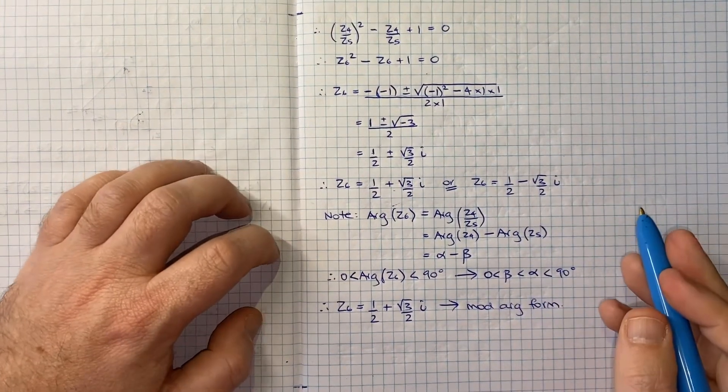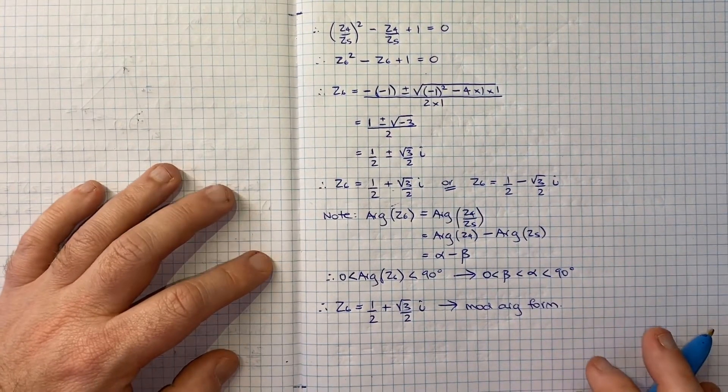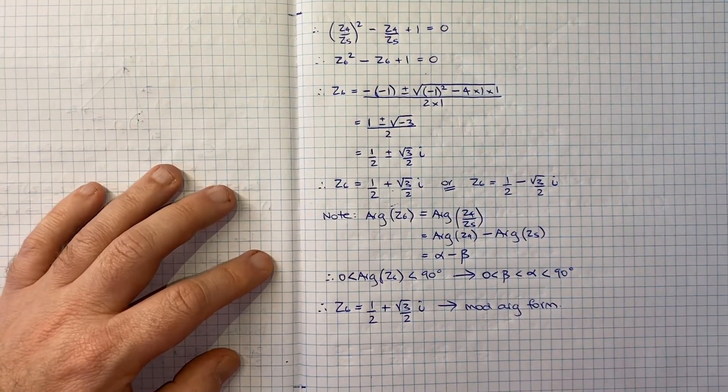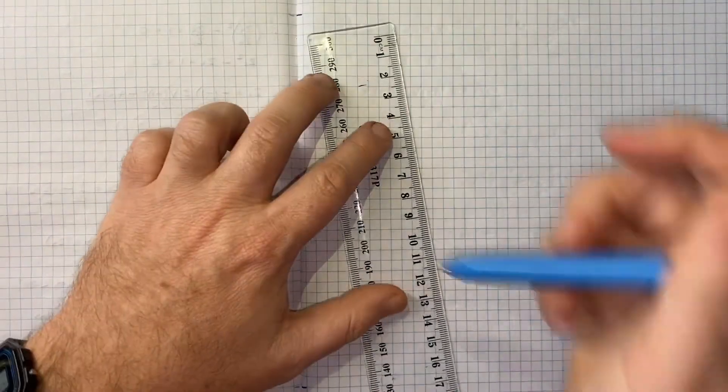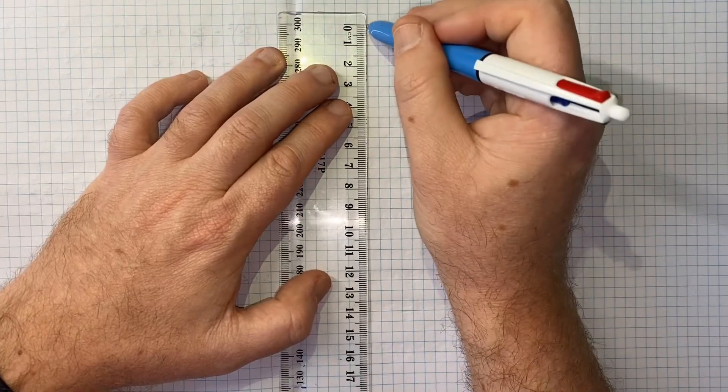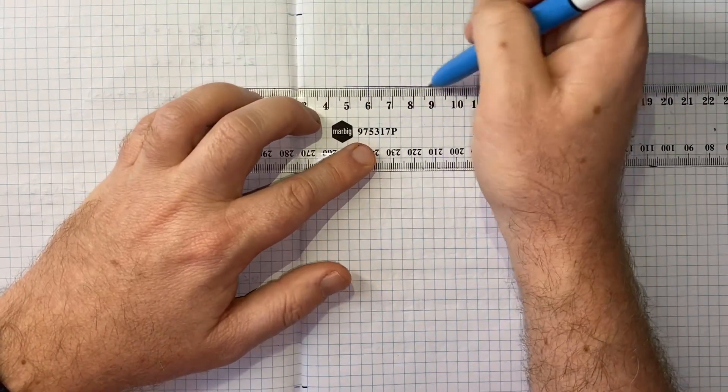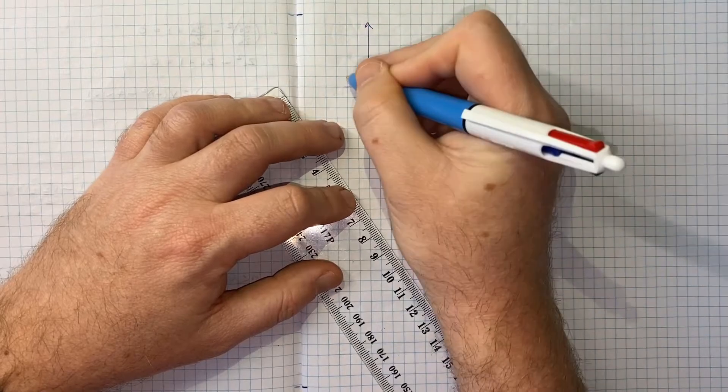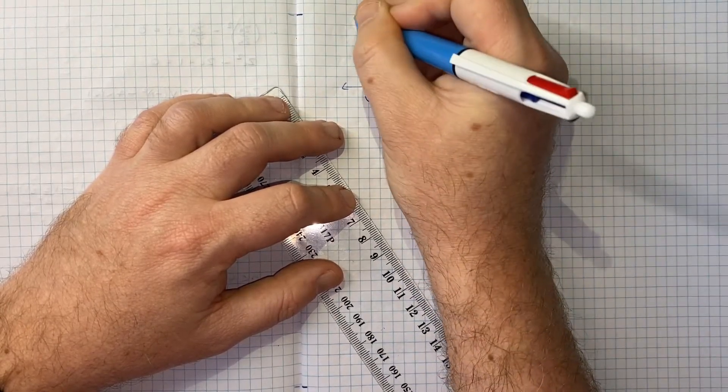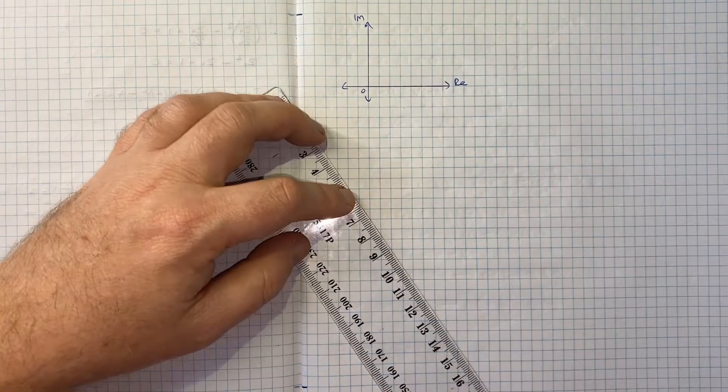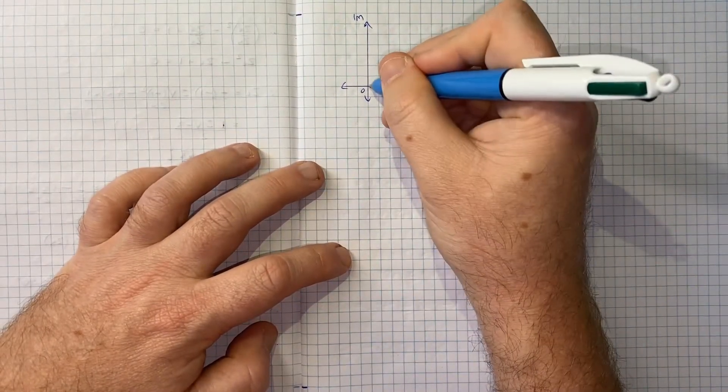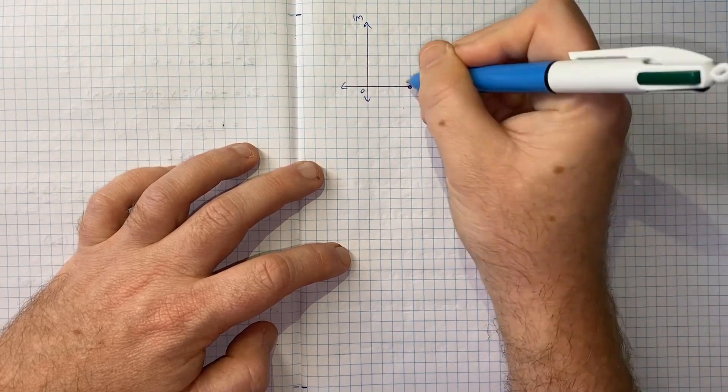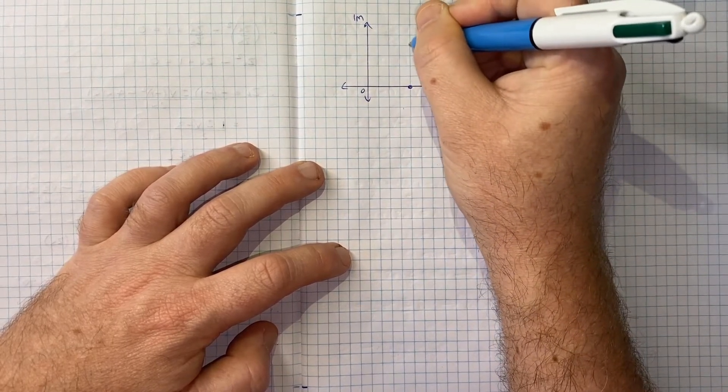Now our challenge becomes let's get this into mod arg form, and then we're basically done with this question. I might turn over just because it's going to be handy to draw up a little diagram here. I think if I just draw a very simple Argand plane, we've got our real and imaginary axis.